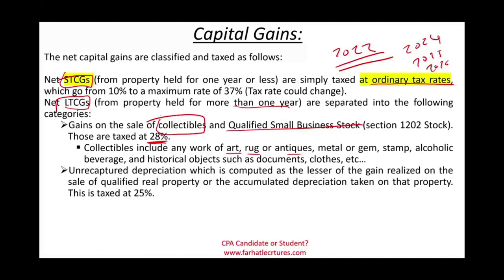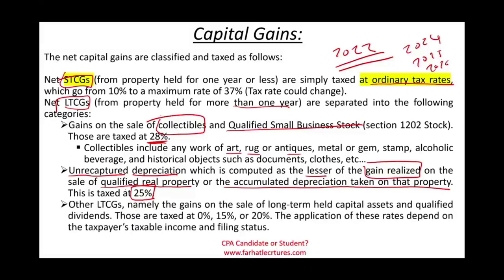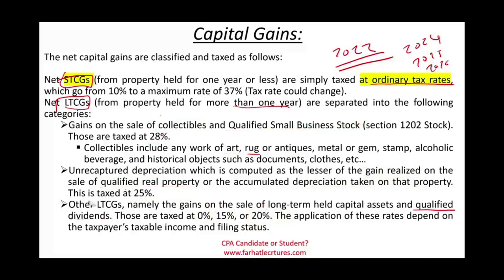The second long-term category is unrecaptured depreciation. All you need to know now is that this is a specific category for gains on qualified real property equal to the lesser of the gain realized or the accumulated depreciation taken. Unrecaptured depreciation is taxed at 25%. We'll have a whole session dedicated to this topic. The third and most common category is other long-term capital gains and qualified dividends, taxed at 0%, 15%, or 20%.